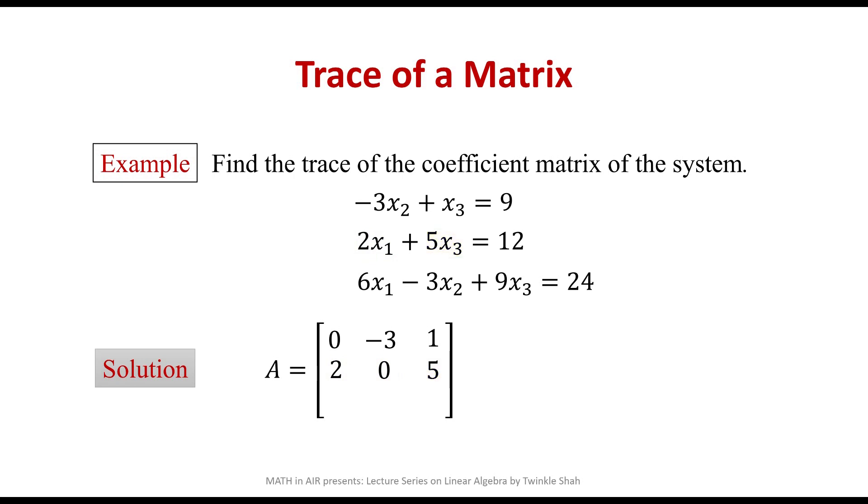Now let's look at the third equation: 6x1 minus 3x2 plus 9x3 equals 24. In this equation, the coefficient of x1 is 6, the coefficient of x2 is negative 3, and the coefficient of x3 is positive 9.